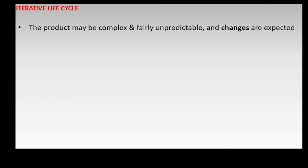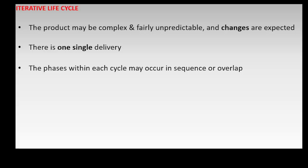In the iterative life cycle, there is little or no upfront planning. The product may be fairly complex and unpredictable, and changes are expected. There is one single delivery. A project is completed in several small cycles. Product versions or prototypes are created and refined in each cycle up to the last cycle, when the final version is delivered. The phases within each cycle may occur in sequence or overlap. The goal is to achieve correctness of the solution.